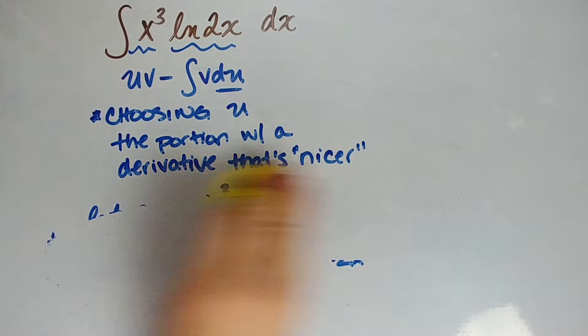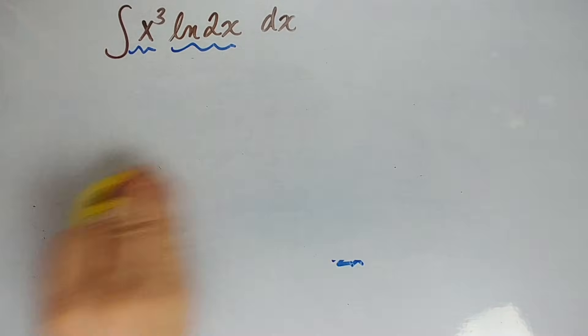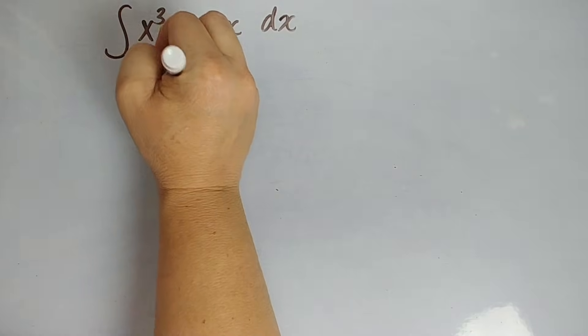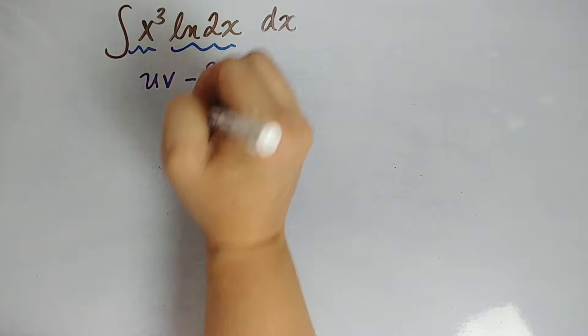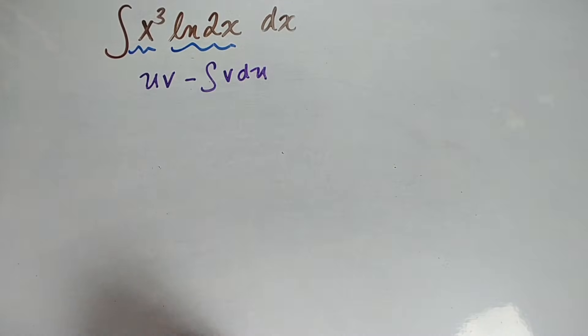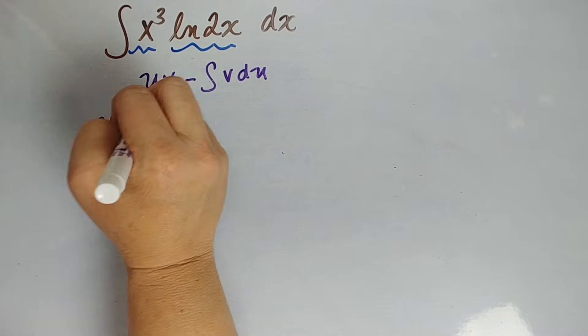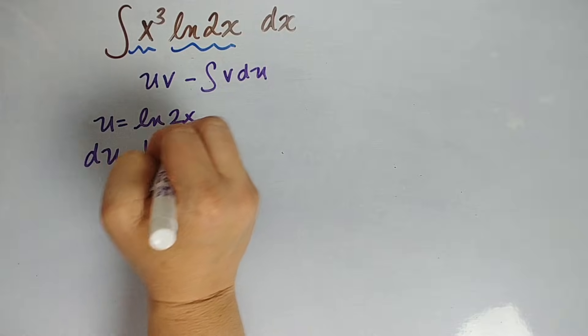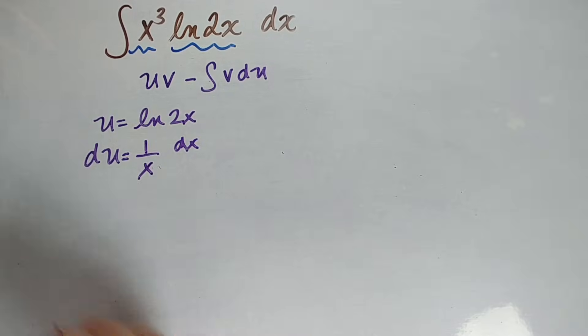All right, so let's get rid of all of this now. Probably could have kept the formula there, that's okay. We'll write it again. Integration by parts is uv minus the integral of vdu. We already said we're going to let u be the natural log of 2x because then du is 1 over x dx.